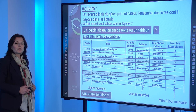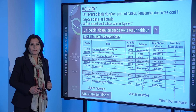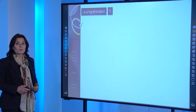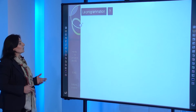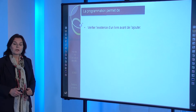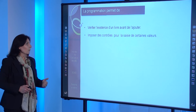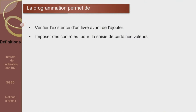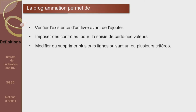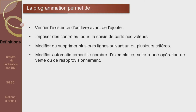Y a-t-il une solution pour remédier à tous ces problèmes ? La programmation, bien sûr. La programmation va permettre de vérifier l'existence d'un livre avant de l'ajouter, d'imposer des contrôles pour la saisie de certaines valeurs, de permettre la recherche multicritères pour la modification ou la suppression de plusieurs livres, et de prévoir une mise à jour automatique du nombre d'exemplaires suite à chaque opération de vente ou de réapprovisionnement.